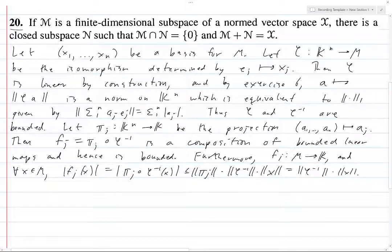So by Hahn-Banach, each fⱼ has an extension Fⱼ which maps from X to K. And this is going to be a map of norm less than or equal to φ⁻¹. Let's just say such that norm of Fⱼ is less than or equal to norm of φ⁻¹.